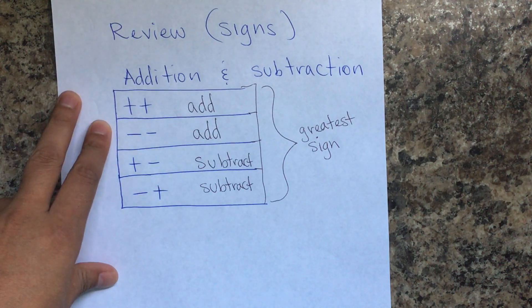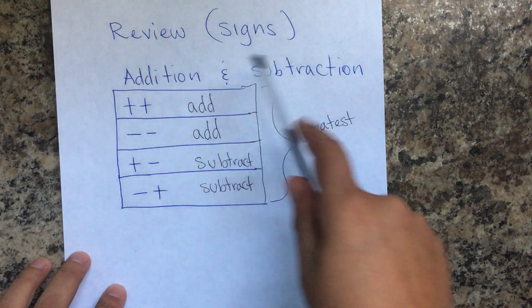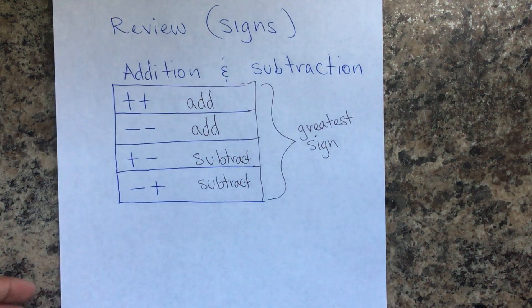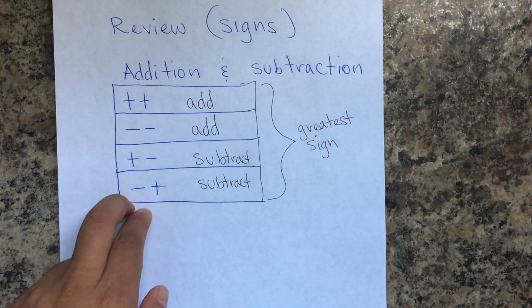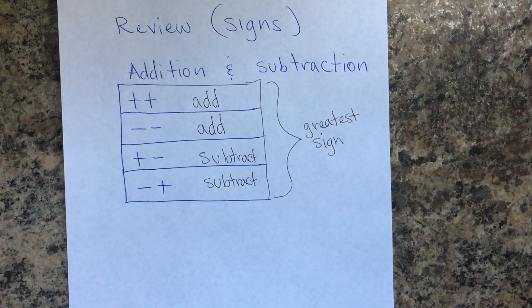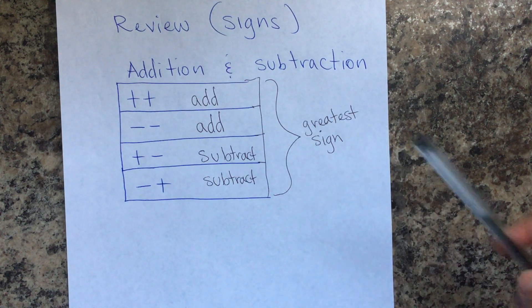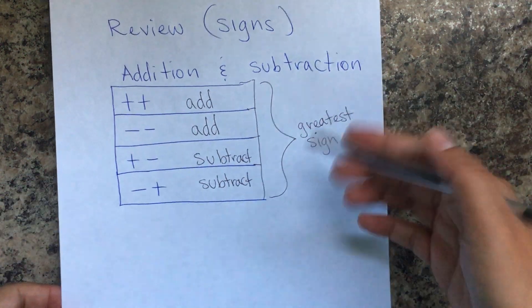Have the law of signs — la regla de los signos para la suma y resta, que es diferente a multiplicación y división, la vamos a ver en la próxima lección. Signos iguales se suman; signos diferentes se restan y se queda el signo del mayor. Meaning the strongest one. So having that in mind, let's start with some examples.